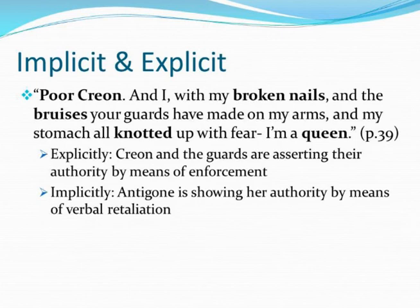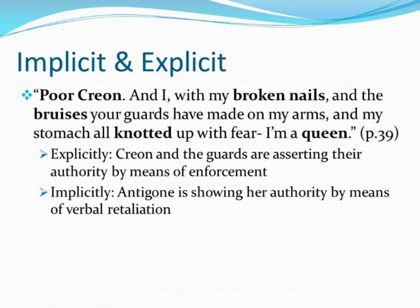This passage shows both implicit and explicit authority. Antigone says: 'Poor Creon. And I, with my broken nails and the bruises your guards have made on my arms, and my stomach all knotted up with fear. I'm a queen.' The first sentence, 'poor Creon,' demonstrates Antigone's power implicitly — by pitying Creon, she has elevated herself. The broken nails, bruises, and fear are physical assertions of the guards' authority over Antigone. But Antigone ends by saying 'I'm a queen,' expressively stating that she does have power — the power to say no to Creon and to accept her fate.